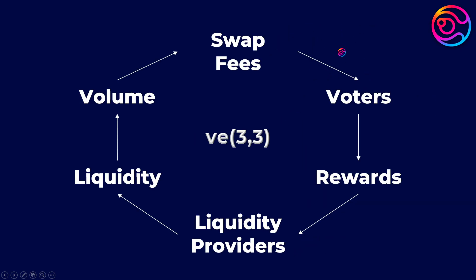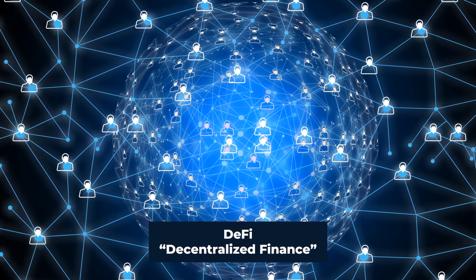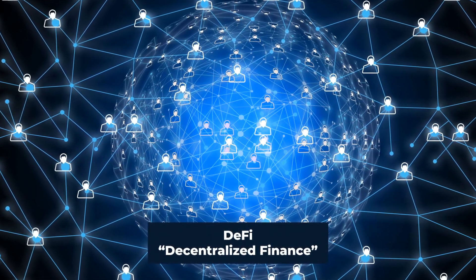Ultimately, these VE(3,3) tokenomics lead to more liquidity. This is all important because more liquidity helps reduce slippage, which is the difference between a swap's expected price and its actual price. The more liquidity, the lower the slippage, which leads to more swap volume and, therefore, more swap fees.